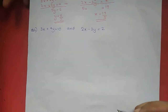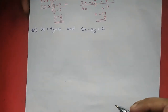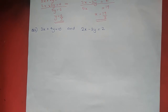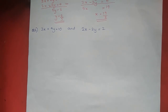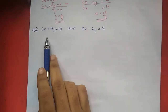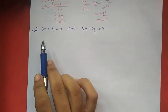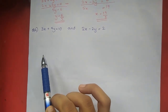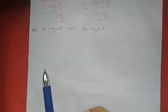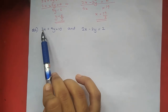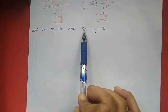Now the second question is: 3x plus 4y equal to 10, and 2x minus 2y equal to 2. We can choose a common coefficient where the coefficient is the same for the same variable.